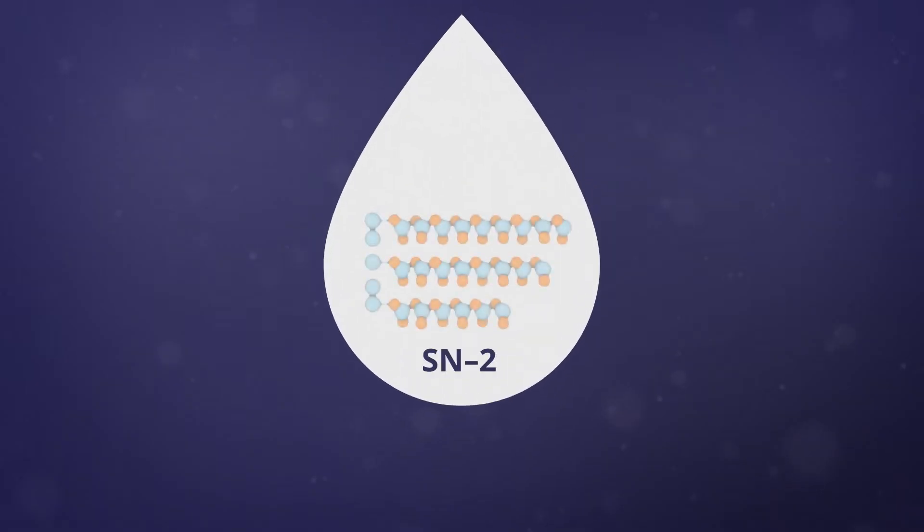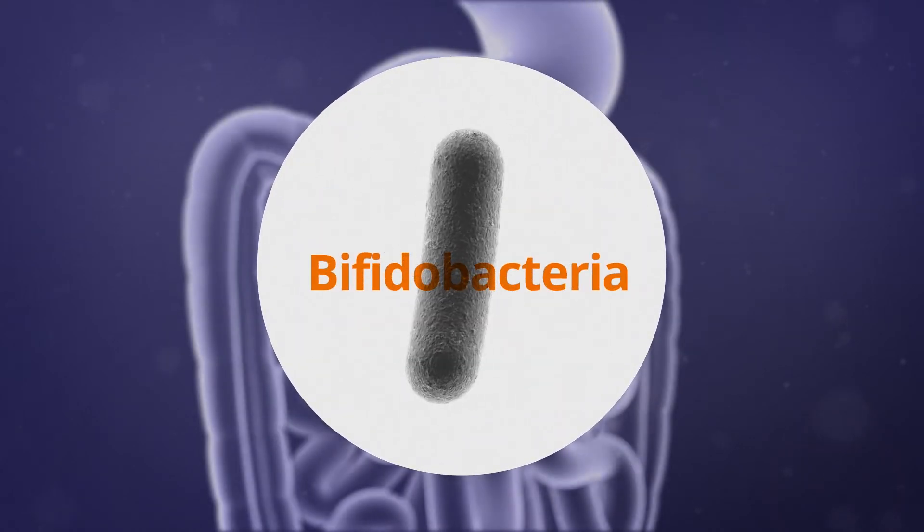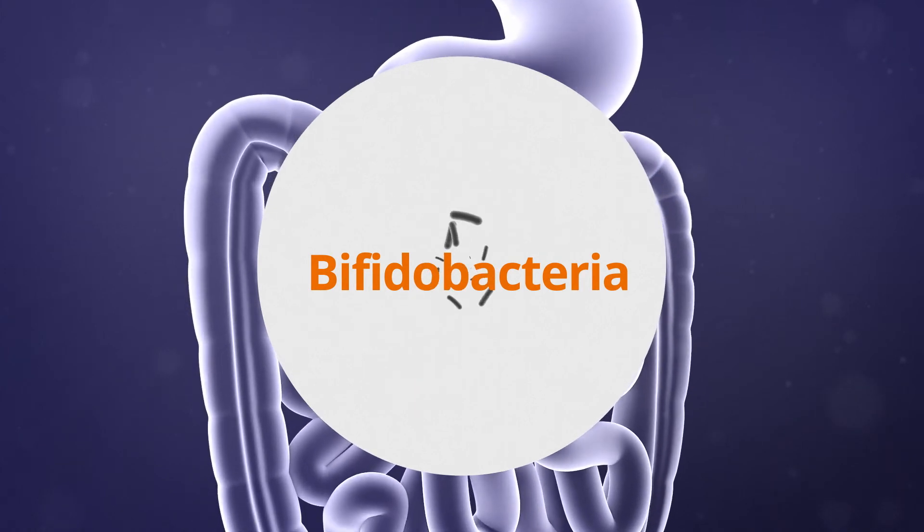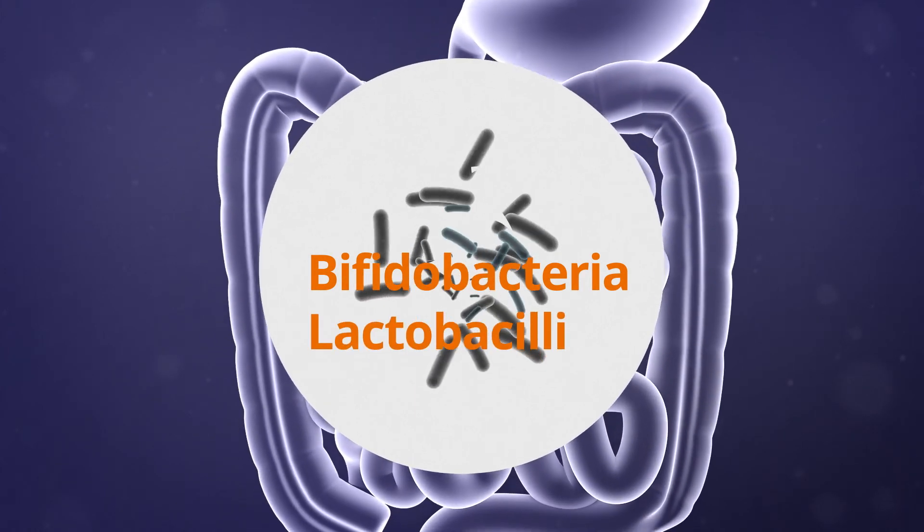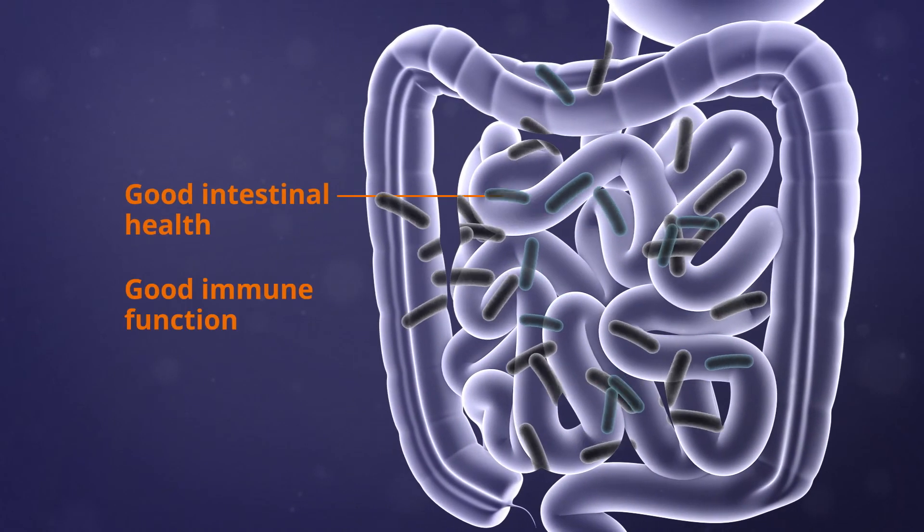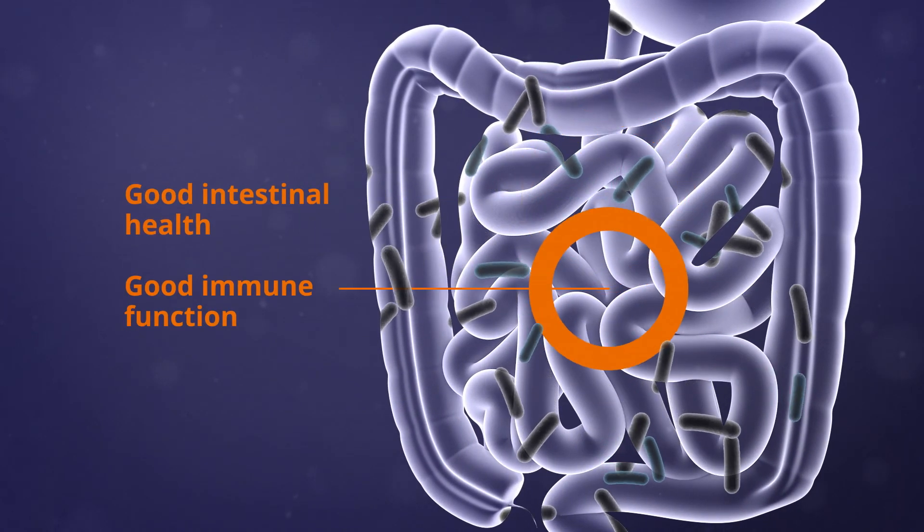Palmitic acid on the SN2 position has also been associated with increasing the quantities of good bacteria, bifidobacteria and lactobacilli in the infant gut microbiome, which supports good intestinal health and immune function.